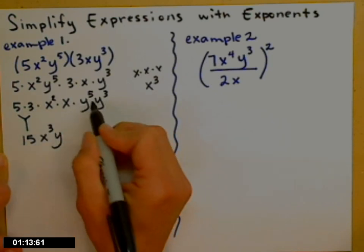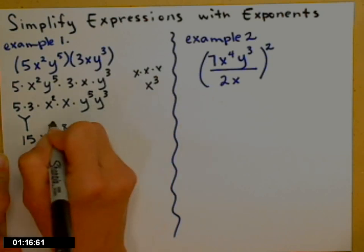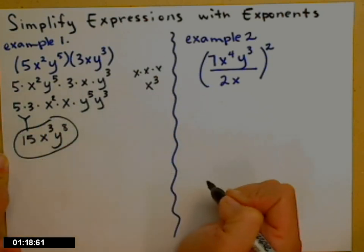Y, so I don't want to write out that many y's. 5 plus 3 is 8. And that's how that first example simplifies.